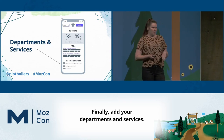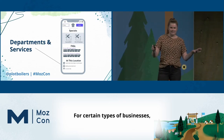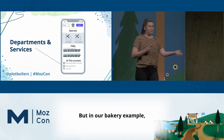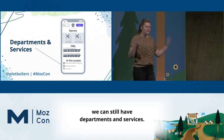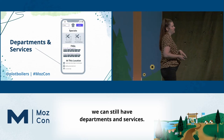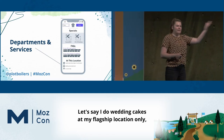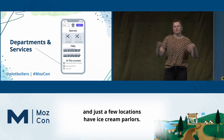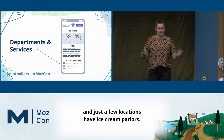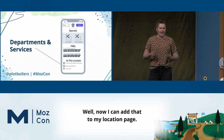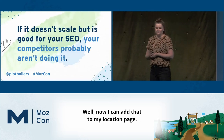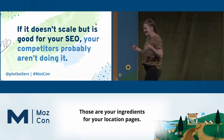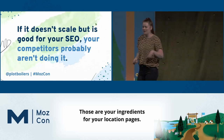Finally, add your departments and services. For certain types of businesses this is obvious, like an auto dealership. But even in our bakery example, we can have departments and services. If I do wedding cakes at my flagship location only, or just a few locations have ice cream parlors, I can add that to my location page. All right, so that's the list — those are your ingredients for your location pages.